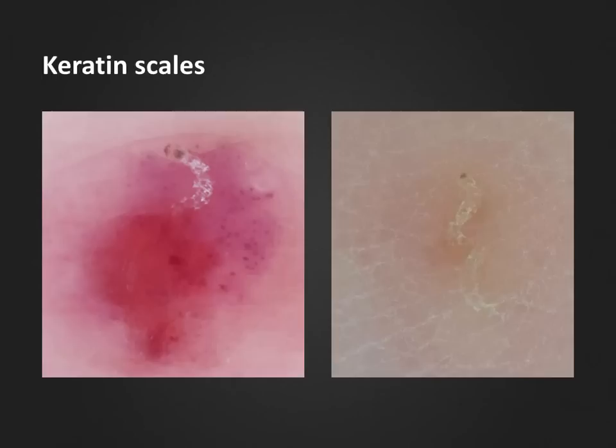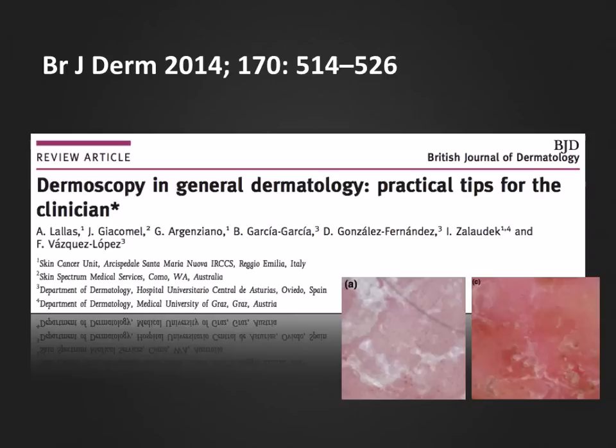Another example of scales are these two cases of scabies, in which a white trail of keratin scales are found in the wake of the scabies mite digging its typical burrow in the epidermis. The typical grey boomerang-shaped head can be seen at the upper tip in both cases.